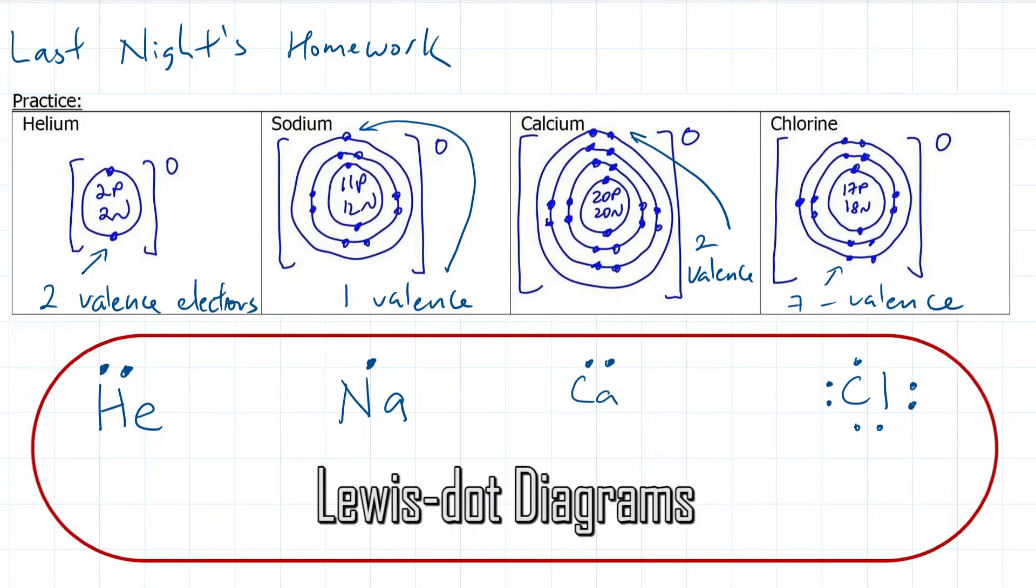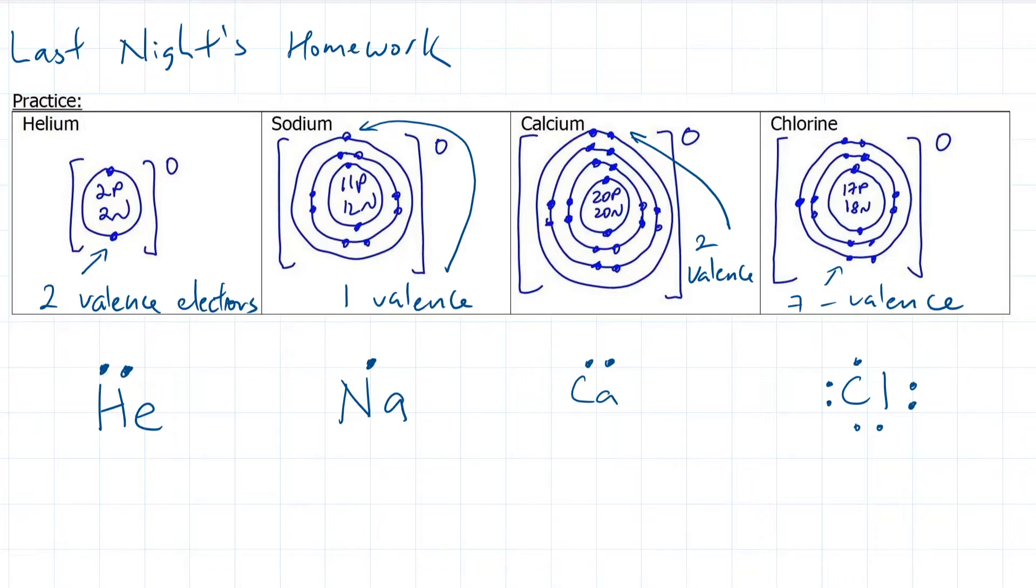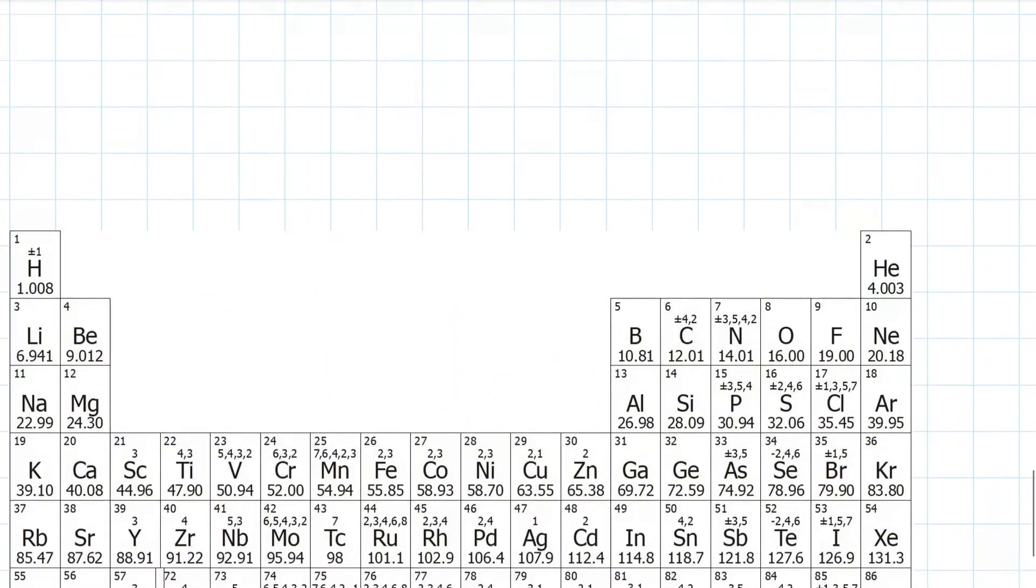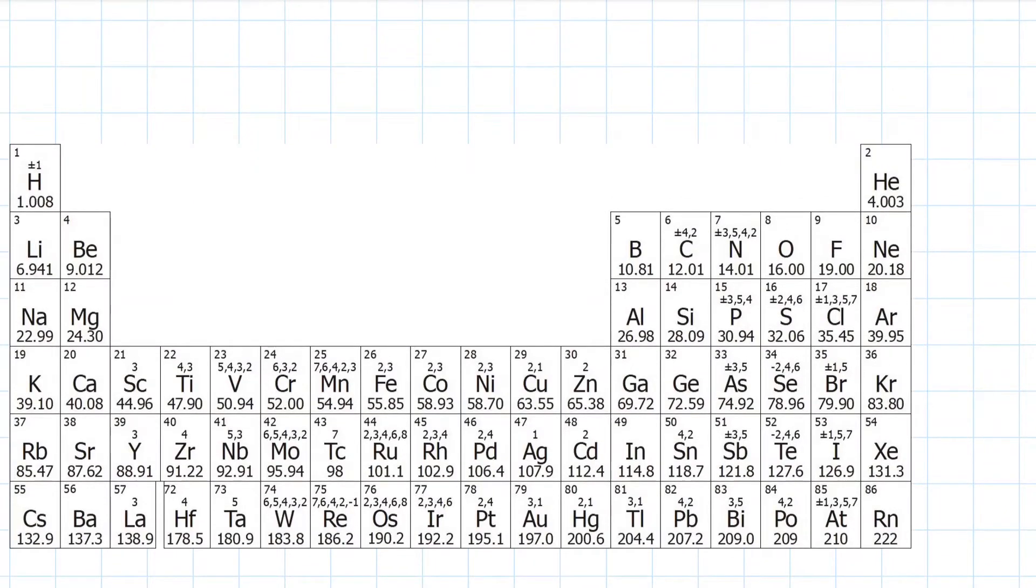Drawing a Lewis dot diagram is much simpler than drawing a Bohr-Rutherford diagram. But so far, the only way to determine the number of valence electrons is to draw the Bohr-Rutherford diagram first, which takes a while. What if I told you that there's a super shortcut? It's part of the secret of the periodic table. The word periodic means a repeating pattern.